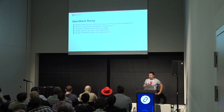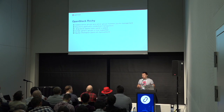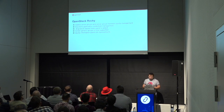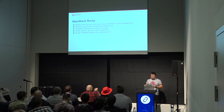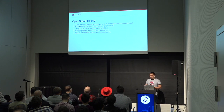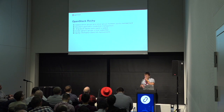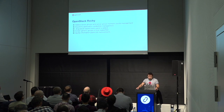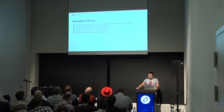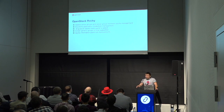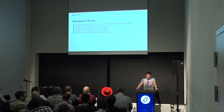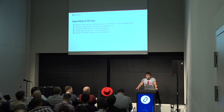Starting from Rocky, we support Keystone application credentials in Horizon, so you can create a credential for your application which will be available in the UI. Finally, we switched to Cinder generic groups and deprecated Cinder consistency groups. In Rocky, Cinder doesn't support consistency groups at all, so everyone is supposed to use generic groups now.